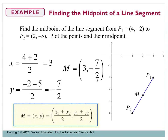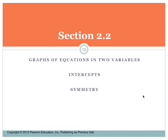On the graph, our first point is at (4, -2) and our next point is at (2, -5). If we connect these with a straight line, our midpoint is smack dab in the middle at (3, -3.5). Now let's look at section 2.2, which covers graphs of equations in two variables, intercepts, and symmetry.